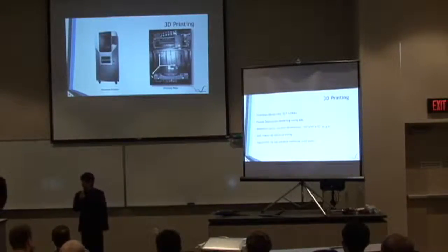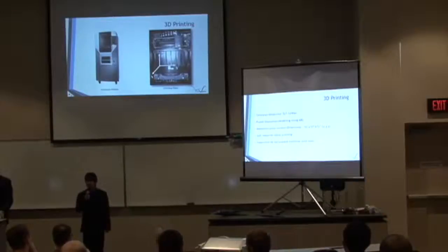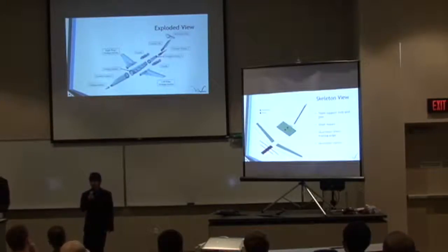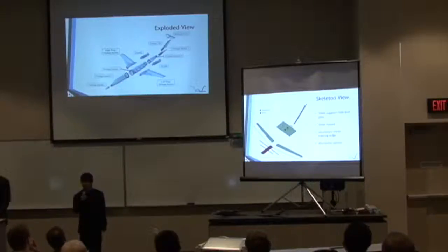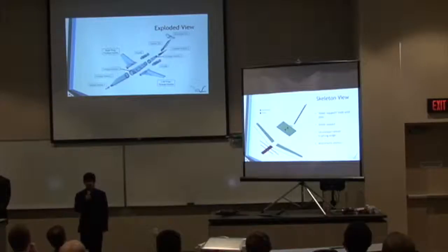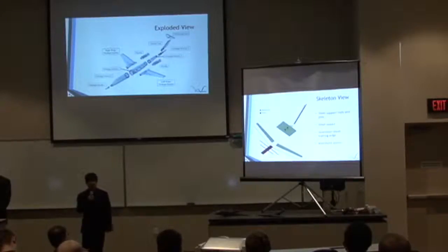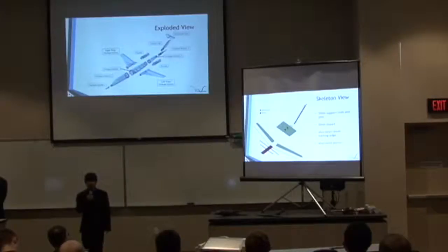To print the model, the Stratasys SST-1200ES printer was utilized to print all of our ABS plastic parts. The primary screen shows all of these plastic parts in an exploded view. There were five fuselage sections: the left and right wing sections, as well as fuselage cells and the horizontal and vertical tail — eight plastic parts in total. On the secondary screen, steel rods shown in red were used to reinforce both the vertical tail and the wings, while aluminum shown in green was used to construct the fuselage pipeline and extend our leading edges, since the printer would not print our thin leading edges.